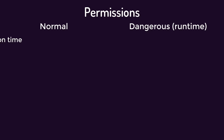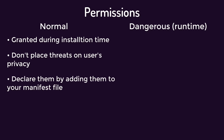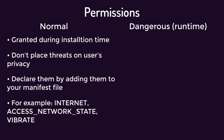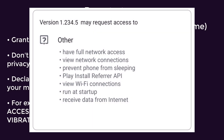Normal permissions are granted automatically at installation time, as they don't pose any threats to user privacy. The only thing you need to do to declare those permissions is add them to your manifest file. Access network state, internet, and vibrate are examples of normal permissions. Here is a list of an app's install-time permissions as it appears in the Play Store.